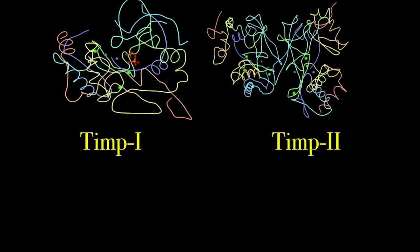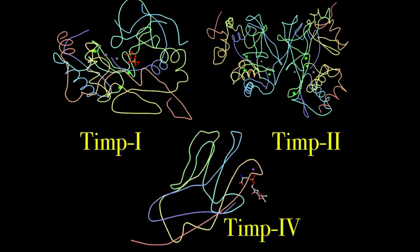The human genome contains four paralogous genes encoding TIMPs 1 through 4, based on which family of MMPs they inhibit.